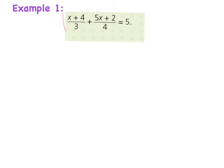So I focus on this: I have a fraction plus another fraction, and to add two fractions I need a common denominator. In this case my denominators are 3 and 4, so my common denominator — a number they both go into — is 12.